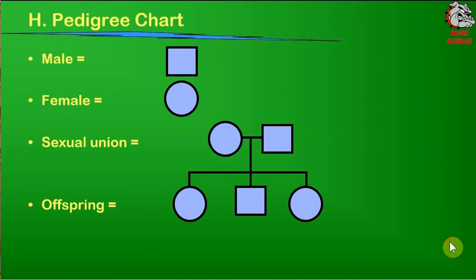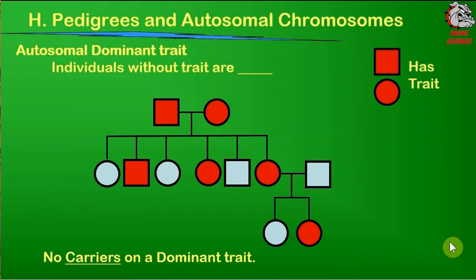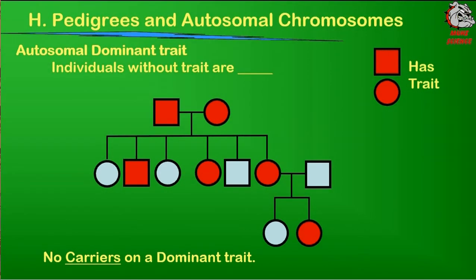Let's take a look at how we can use pedigrees to figure out genotypes. We're going to be talking about autosomal dominant traits first. Autosomes are body chromosomes, so we're not talking about the sex chromosomes — those are a little bit more complicated. Autosomal traits are traits on normal chromosomes 1 through 22.